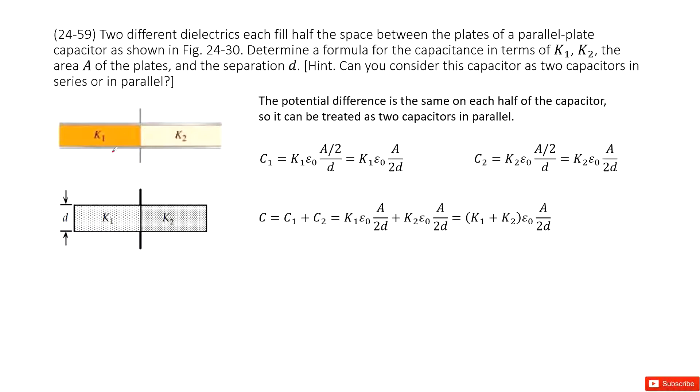Now we look at this system. We can see two different dielectrics k1 and k2, each filling half the space between the planes of a parallel-plate capacitor. We need to determine the equivalent capacitance for this system.